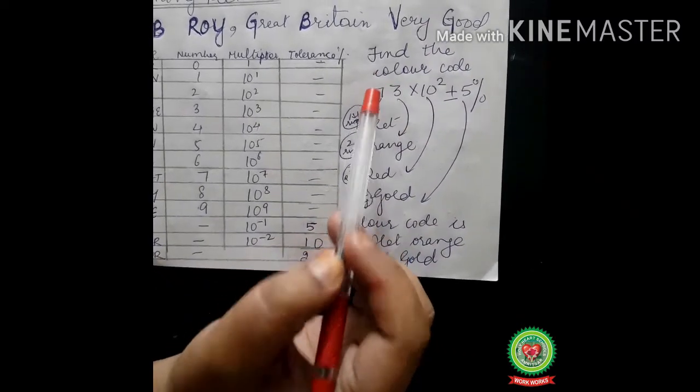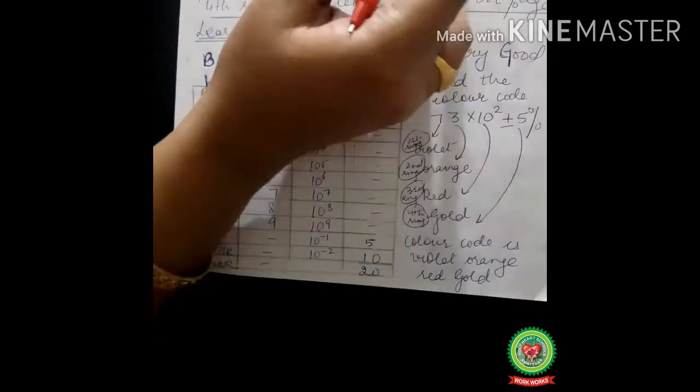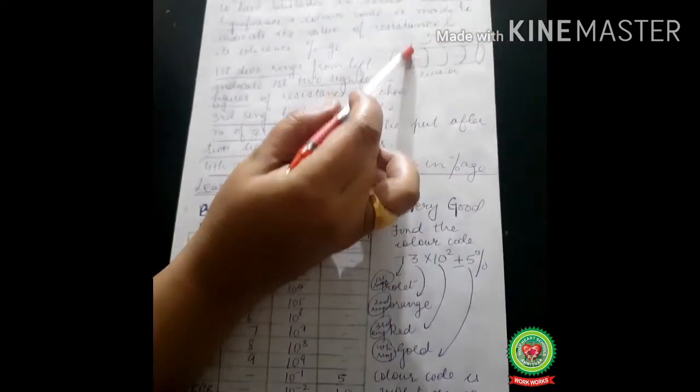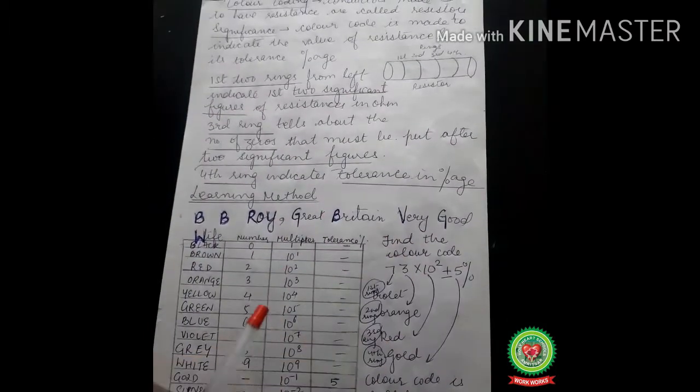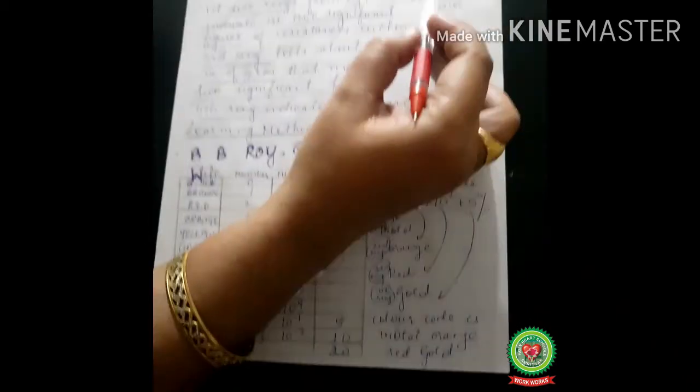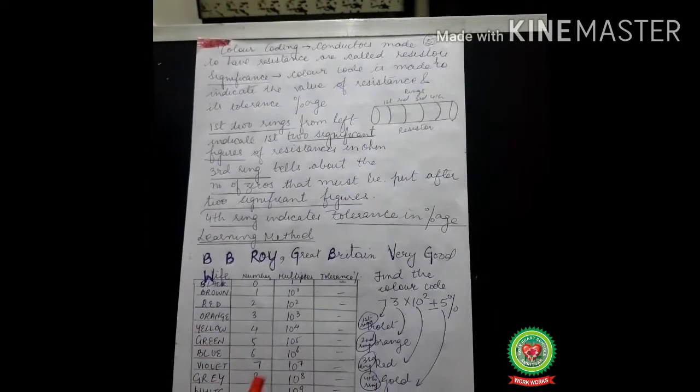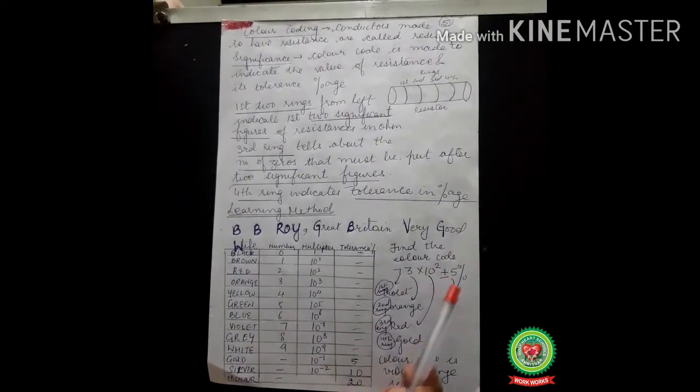The second ring is 3, which is orange. I've written here orange. Then comes 10 to the power 2. The third ring tells us 10 to the power 2, that is red color. Then comes plus minus, it can be increased or decreased. So it is 5%, which is gold.